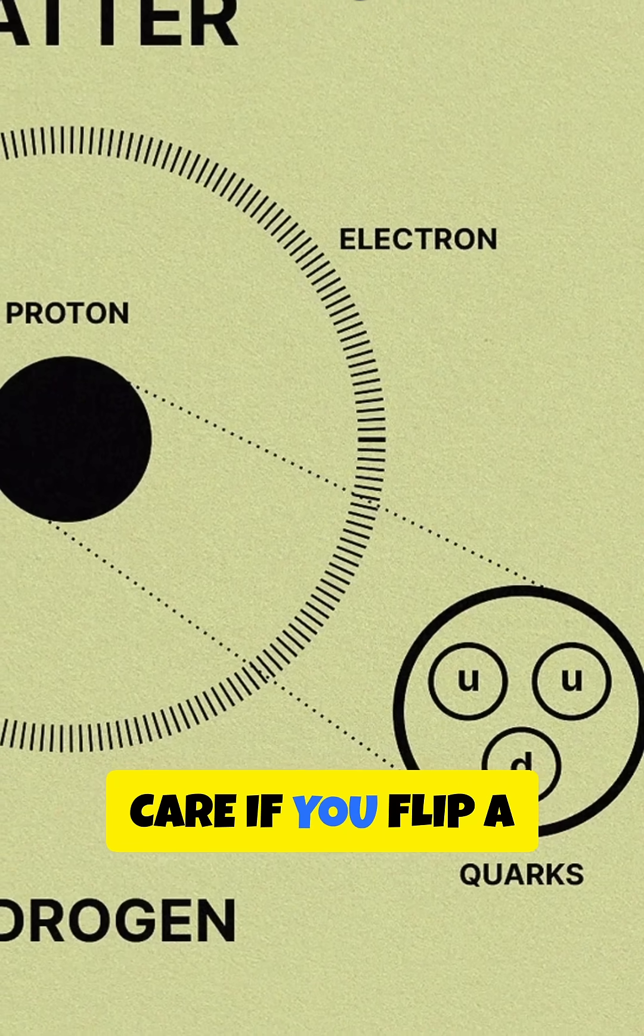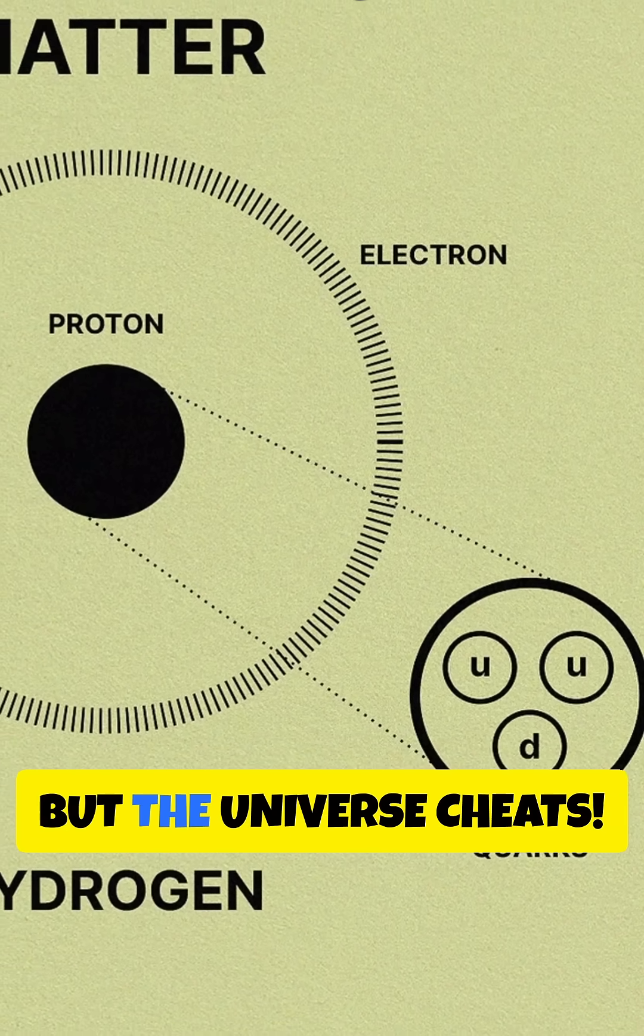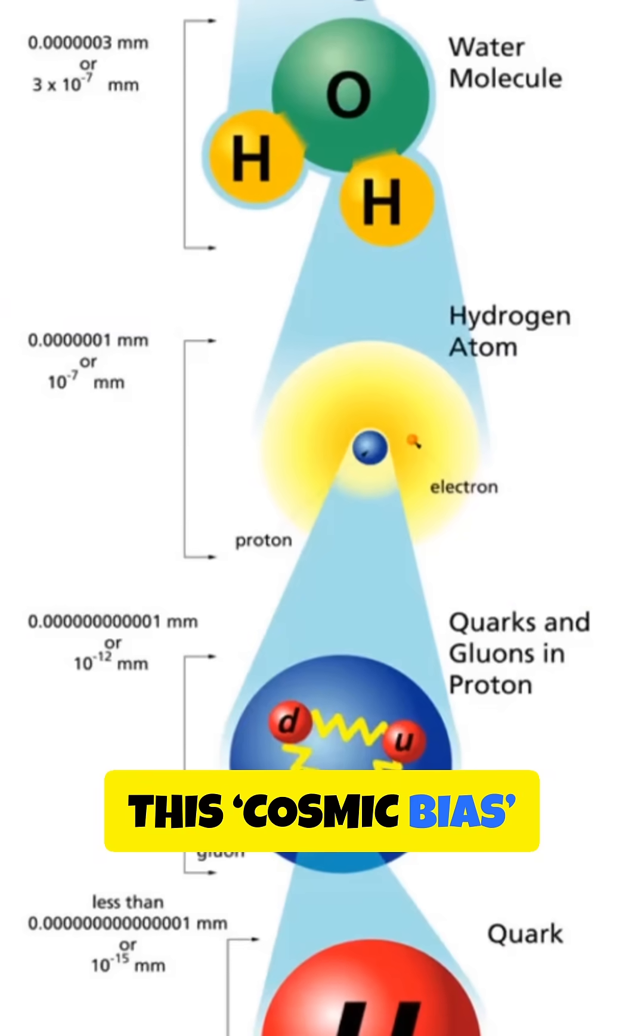CP Symmetry says physics shouldn't care if you flip a particle's charge and mirror it, but the universe cheats. This cosmic bias might have saved a fraction of matter, enough to build everything we see.